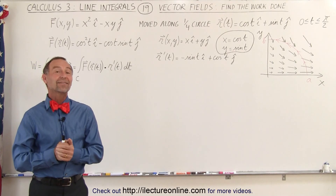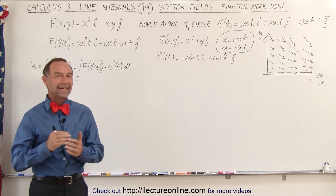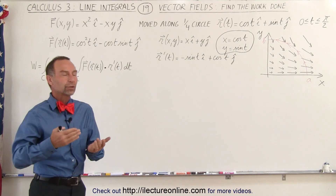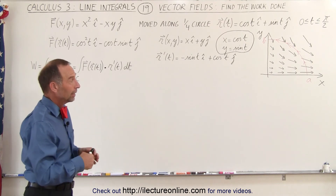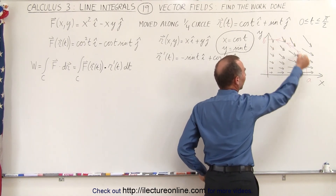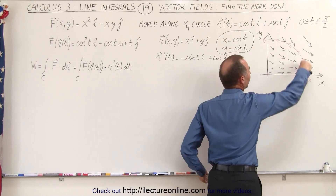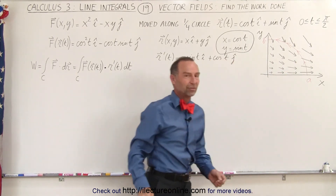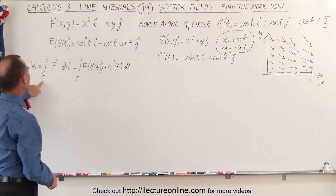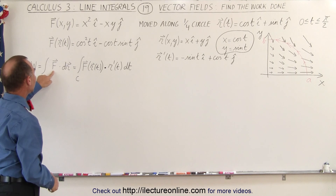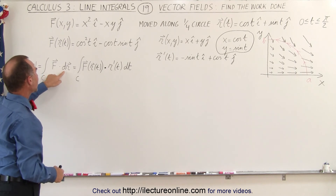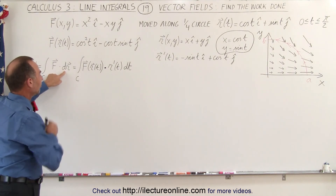Welcome to our lecture online. Now let's take a look at how we do line integrals when we have a vector field. What we're going to do is try to find the work done, which is done by integrating the path of the displacement — indicated by a red curve going from A to B — through an area defined by a vector field. The work done will be defined as the integral over the curve of the dot product of the force with the derivative of the position vector.